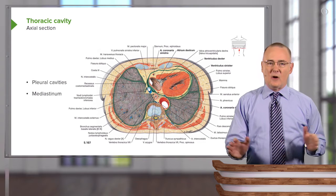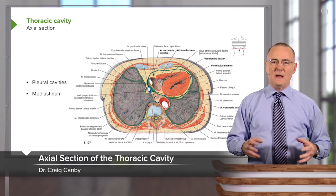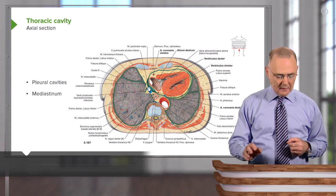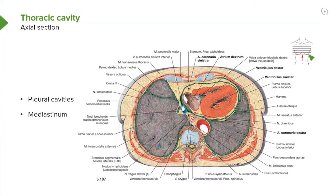Here is a cross section or axial section through the thoracic cavity. The plane of section is right along here where you see the red line. It's very important that this axial section is oriented such that you're standing at the feet of the individual, looking upwards toward the individual's head.